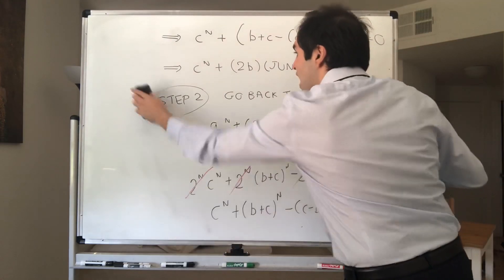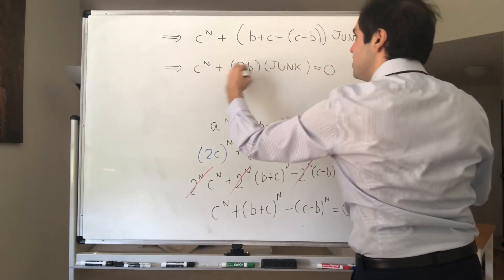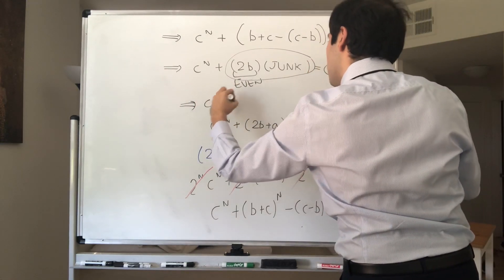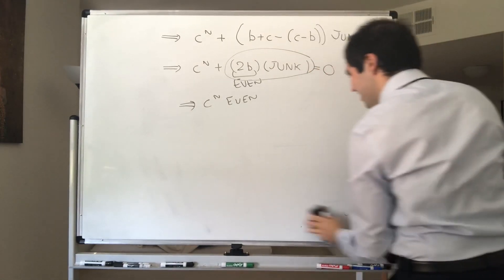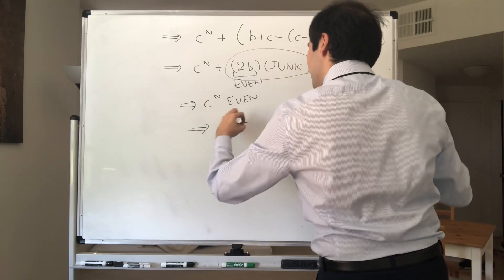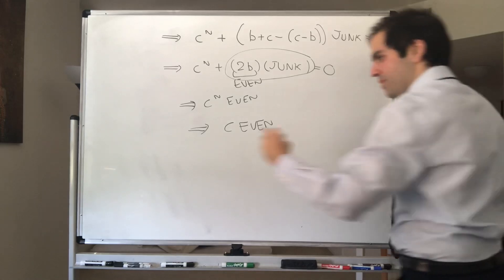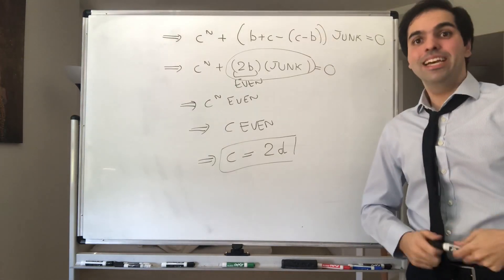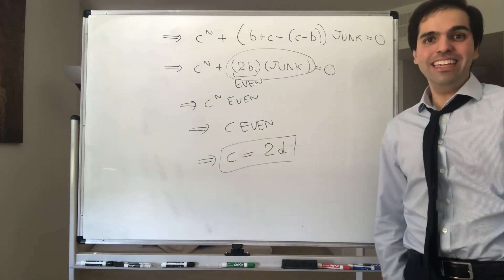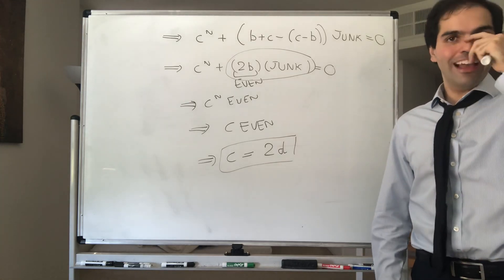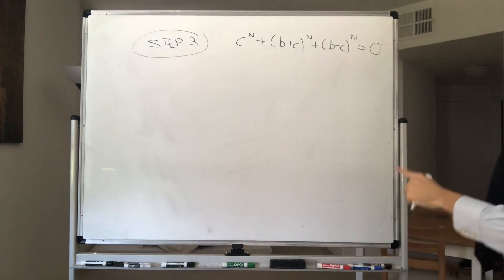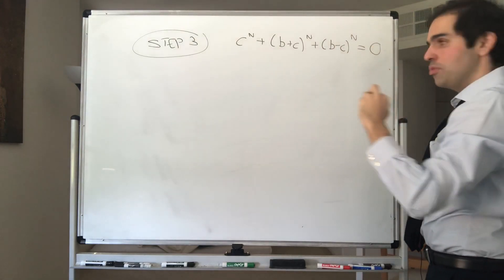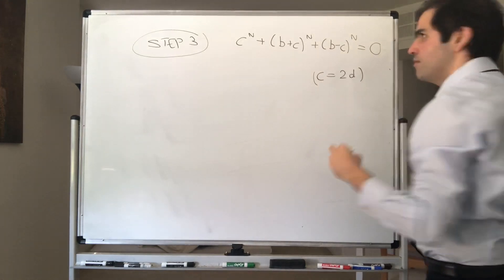So c equals 2d for some integer d. Now you might think you can just apply the same technique for the next step — however, this is not true, and we have to resort to a slightly different technique. Let's go back to our equation c to the n plus b plus c to the n, plus b minus c to the n equals zero, and plug in the fact that c equals 2d. You can see applying the same technique again doesn't quite work, so here we have to resort to something different. Notice we have a plus b to the n and then a minus b to the n — this calls out for the binomial theorem.